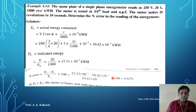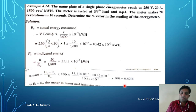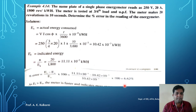The indicated energy is greater than the actual energy, which means the meter is running faster and indicating more. This means the energy meter is not calibrated properly. In this way, we calculate the actual energy, indicated energy, and the percentage error of the energy meter.